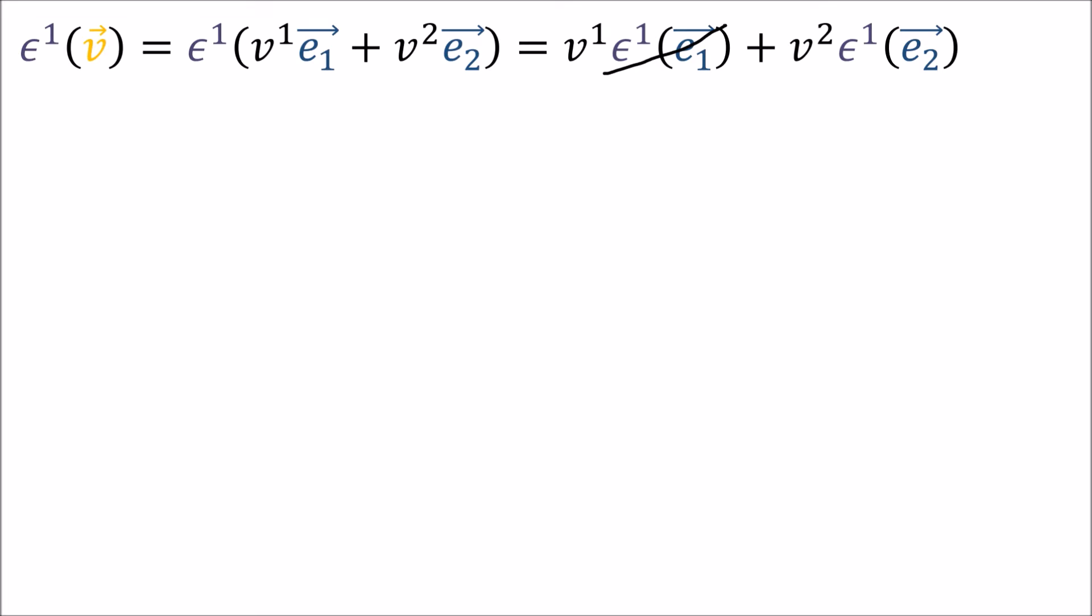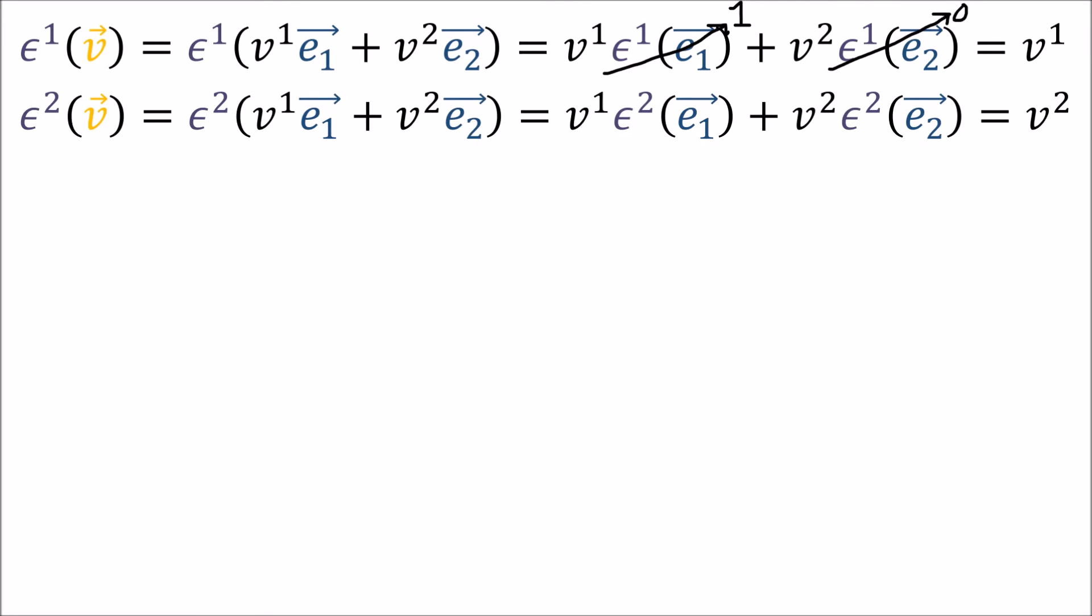Epsilon 1 of e₁ goes to 1 and epsilon 1 of e₂ goes to 0 by definition, so we're just left with v¹. We can do the same thing and apply epsilon 2 to v and we end up with the second component v². What these epsilons are doing is projecting out vector components. When we apply εⁱ to v we get the i-th component of v in the e₁, e₂ basis.